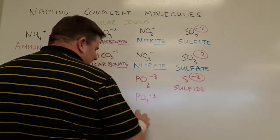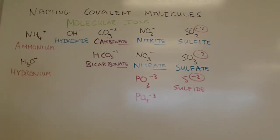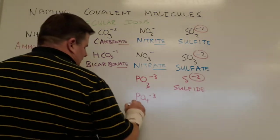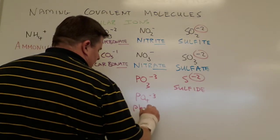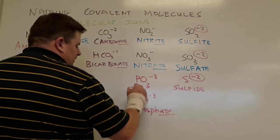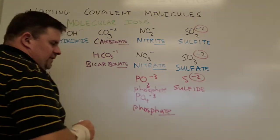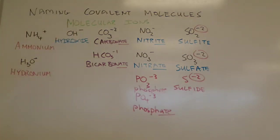So what's going to be the name of PO3 3- and what's going to be the name of PO4 3-? Which one do you think is phosphate? Yeah, you got that right. This one is phosphate and this one over here is phosphite. Good. Beginning to see how the patterns evolve here.